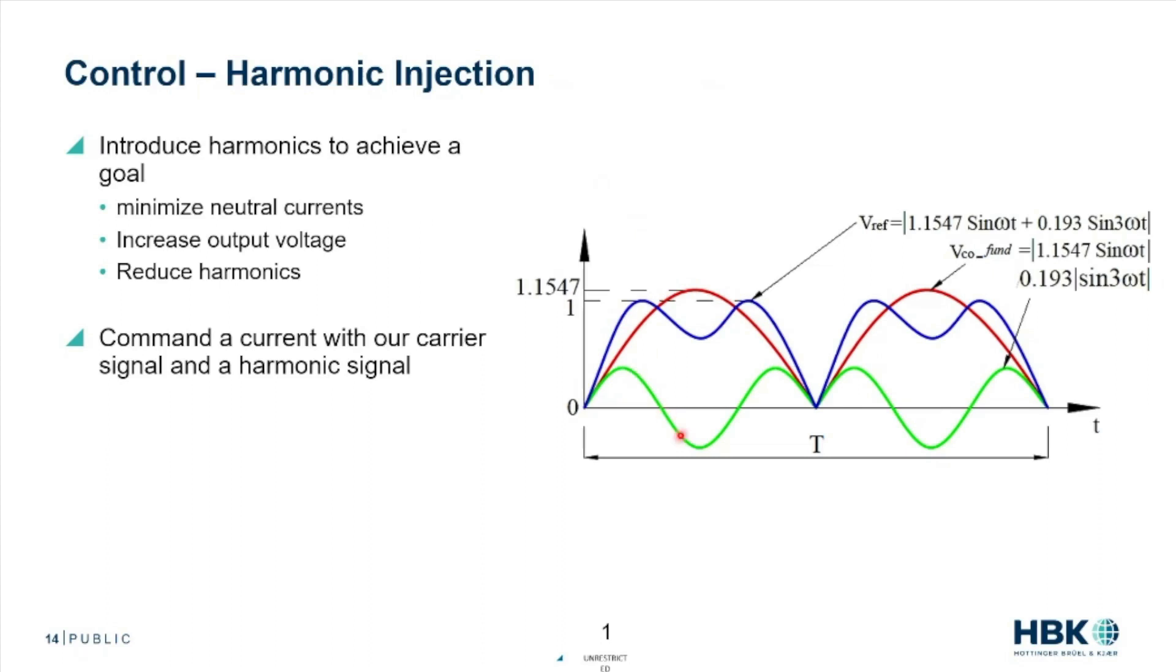I can use something like my third harmonic in my green wave, add those together, and have my inverter output this blue wave, which is fundamental plus third harmonic, and we can increase the output voltage level.